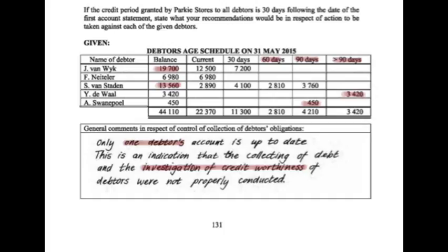If we had investigated their creditworthiness more thoroughly, we would perhaps have picked up that they don't pay their debt diligently, and therefore we should not have allowed them credit in the first place. Now let's consider each debtor individually. The first debtor is Jay von Veik. His biggest problem is that he still owes us $7,200 for 30 days — he should have paid that off already a month ago.